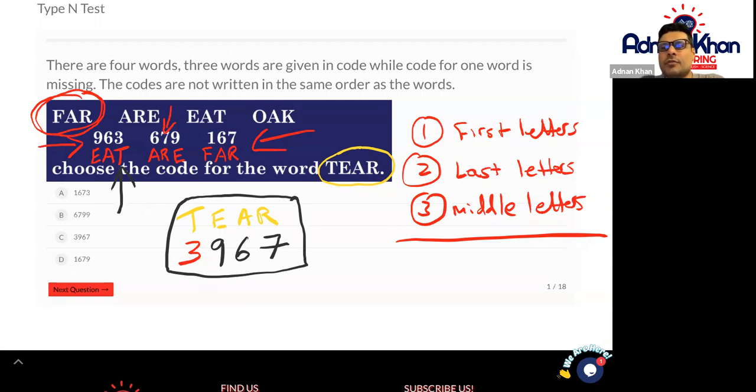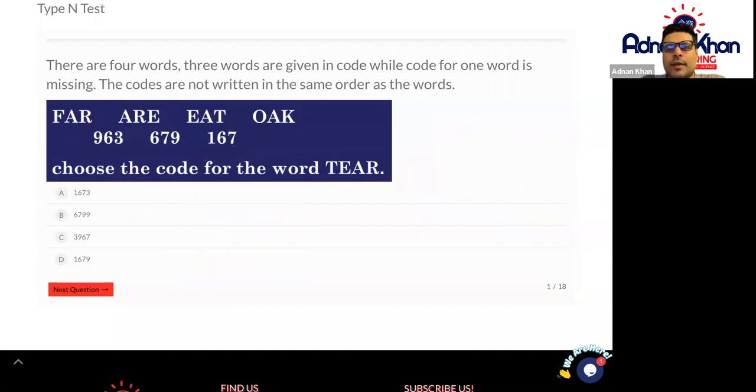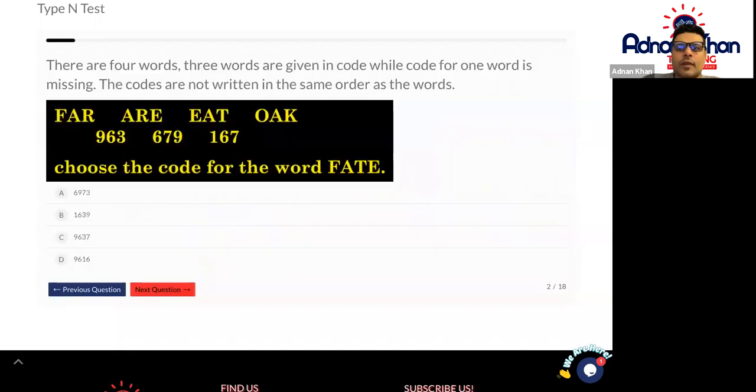Again, use a similar pattern. Look for the first letter, the last letter, and the middle letter when going forward to try and work out the best example. Let's do this one together to give you some extra practice. We have FAR, ARE, EAT, and OAK. Let's look at the first letters first of all. Are there any common first letters? We have F for FAR, A for ARE, E for EAT, and O for OAK. So there are no common double letters there. Let's look at the last letters. We have R, E, T, and K. So there are no common double letters here.